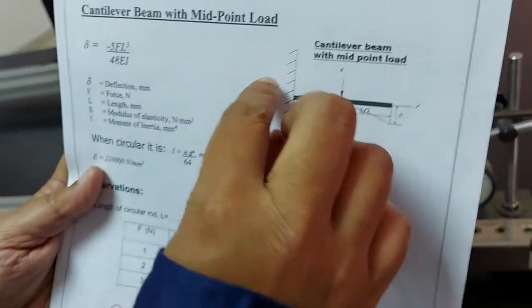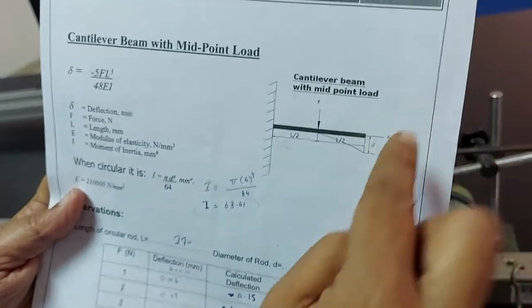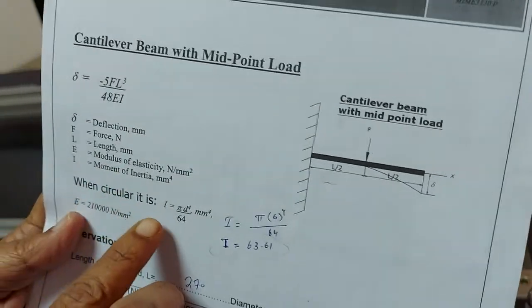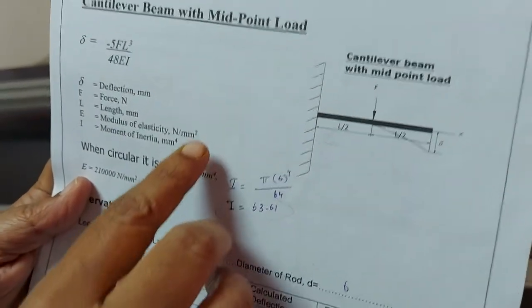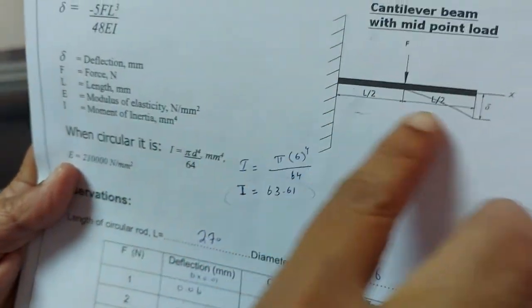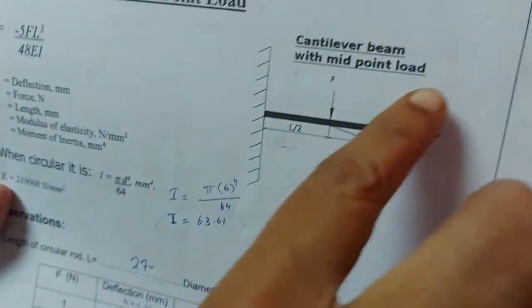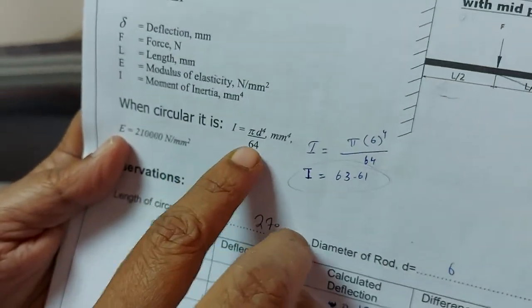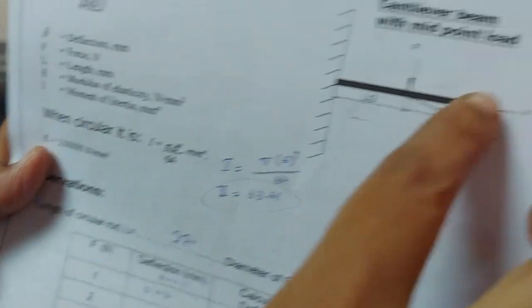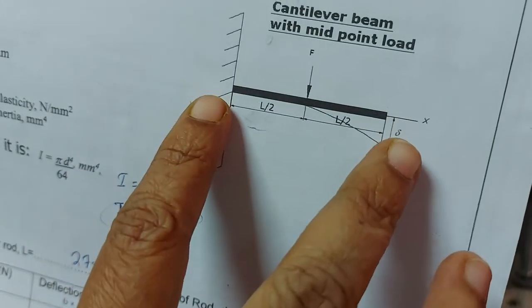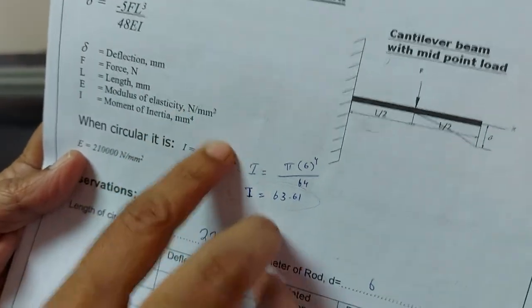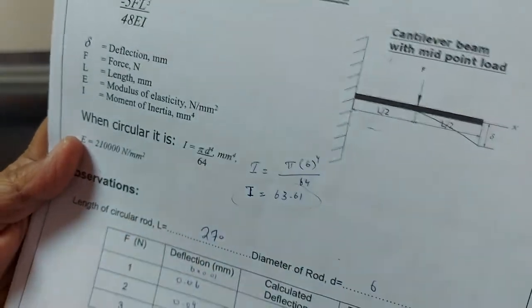And because this beam is the circular beam which is having the circular cross section, we have for moment of inertia I equal to pi d power 4 divided by 64, where d is the diameter of the rod. With the length and the diameter you can be able to calculate the moment of inertia.